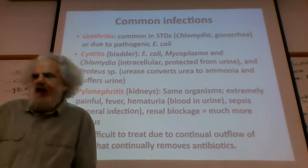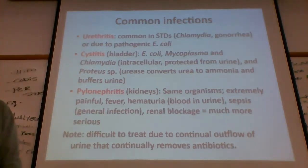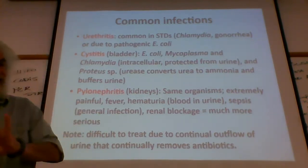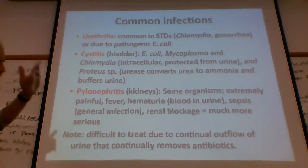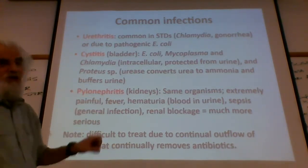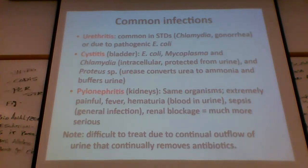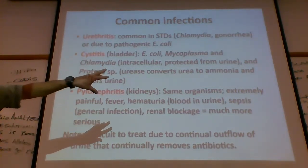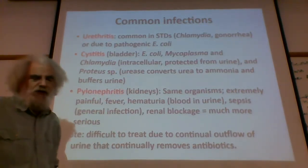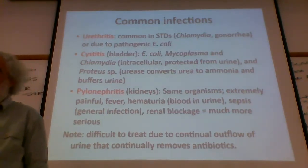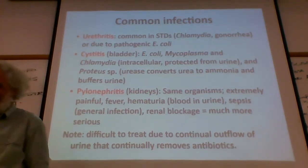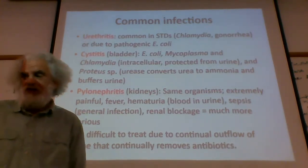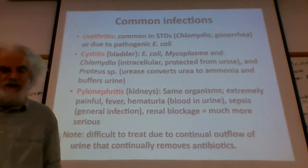Common UTI infections: urethritis is common in STDs. E. coli from feces can get up into the urethra. Cystitis is the term when infection is up in the bladder — caused by E. coli, chlamydia (which is protected from urine as an intracellular organism), and others. Proteus is a bacterium that converts urea in urine to ammonia, which can buffer the urine. Pyelonephritis is the most serious — bacterial infection in the kidneys — and it's difficult to treat because the continual outflow of urine continually removes the antibiotics.